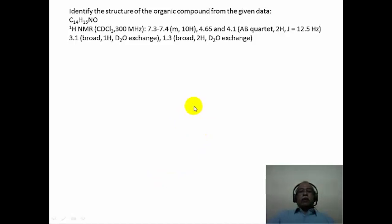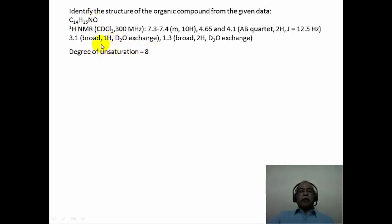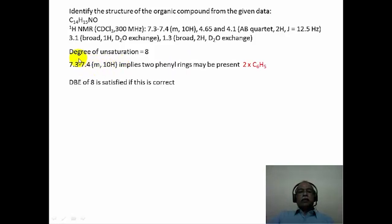Now let us try to solve a simple organic molecular structure using proton NMR spectroscopy alone. The molecular formula is given as C14H15NO. From the molecular formula one can arrive at the degree of unsaturation to be 8 in this molecule. The proton NMR spectrum shows a multiplet at 7.3 to 7.4 ppm of 10 hydrogen intensity. Most likely this 10 hydrogen intensity multiplet in the aromatic region implies two phenyl rings. So let us assume there are two phenyl rings in this molecule.